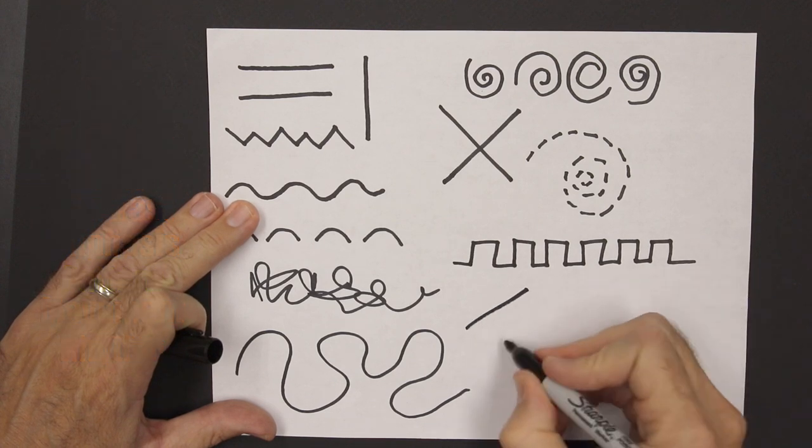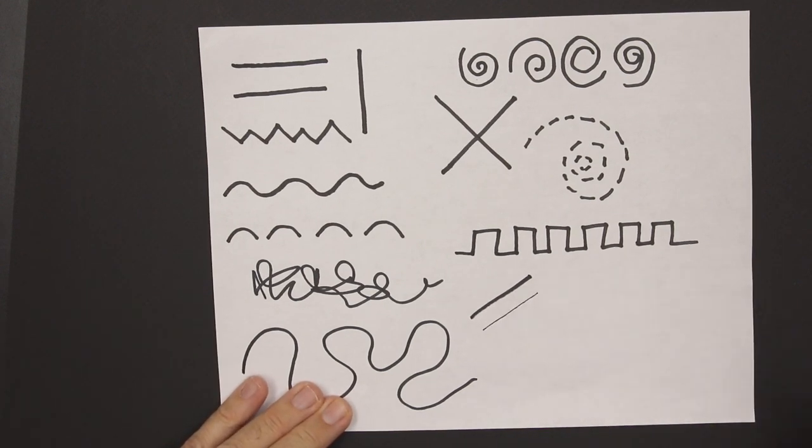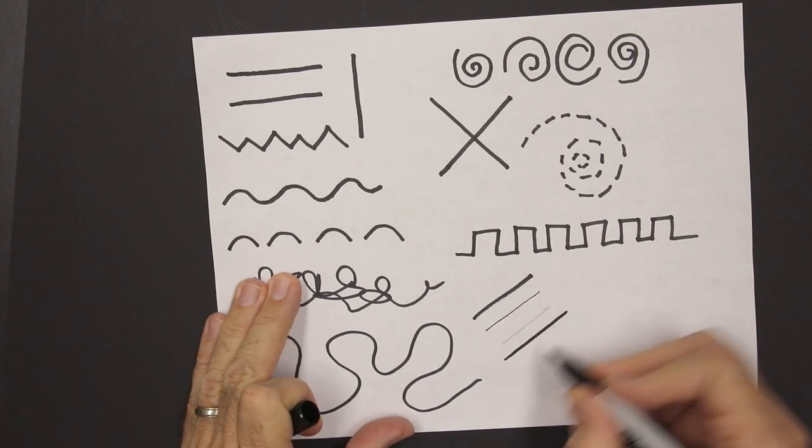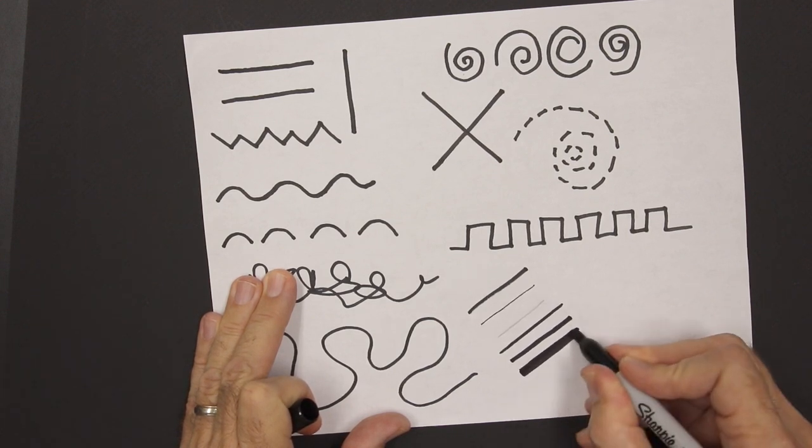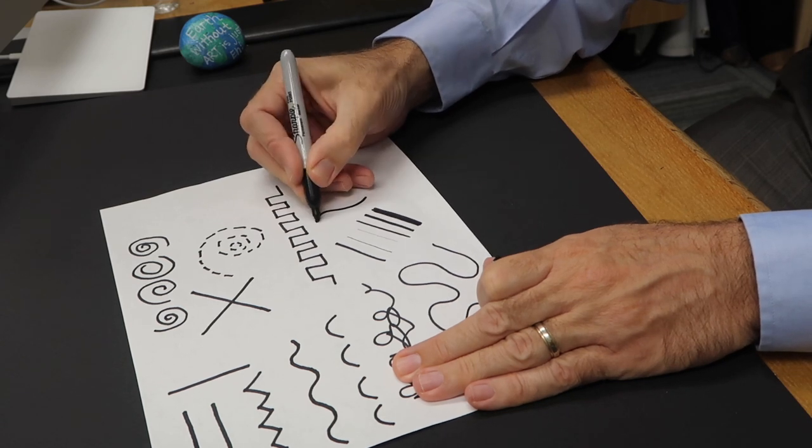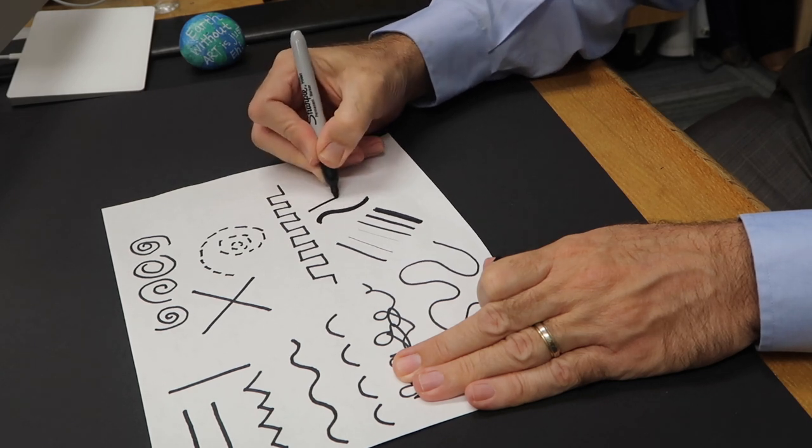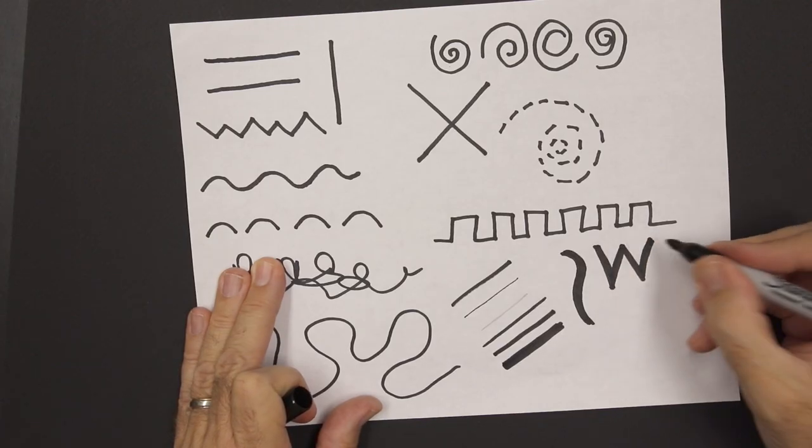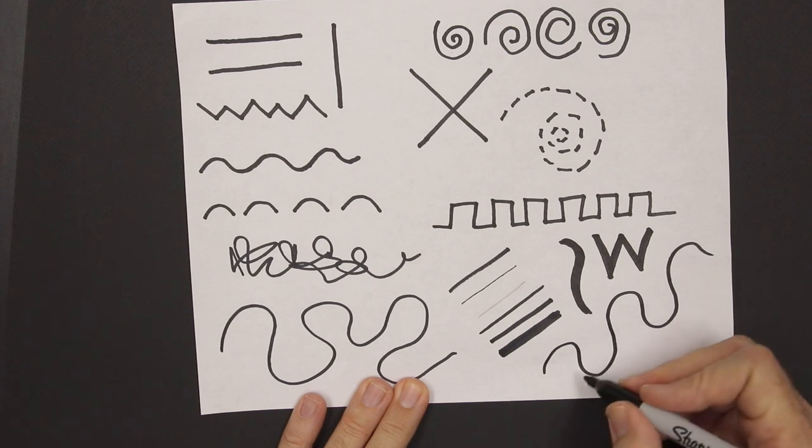Sometimes our lines are thin. And sometimes we can have markers that have a thin point like that or a pencil. But even if we have one size marker or pencil, we can create a thin line and then a thick line. And even fill in more to make a thicker line and we call this varying the thickness of the line. Sometimes we work with computer programs and they call that the stroke. The stroke is the thickness of the line. I bet you could come up with some different types of line that I'm not even thinking of.